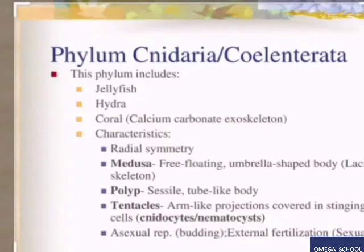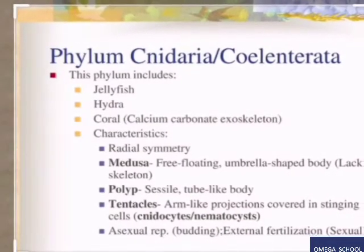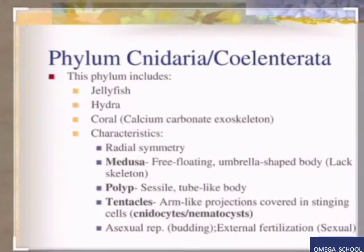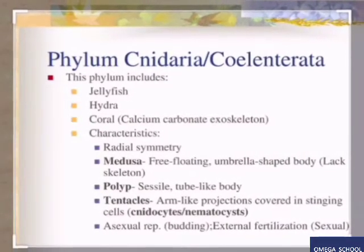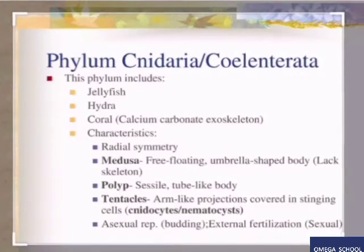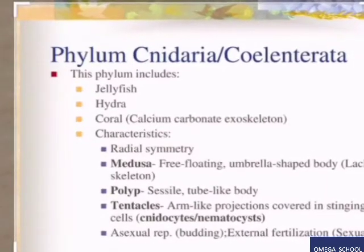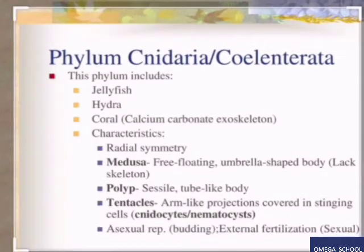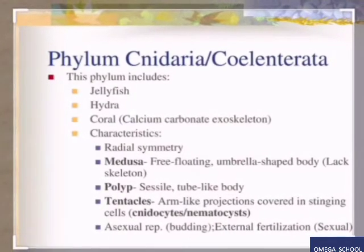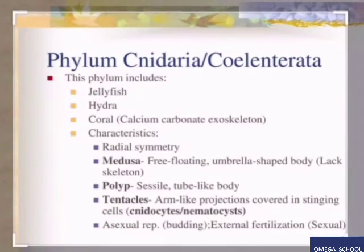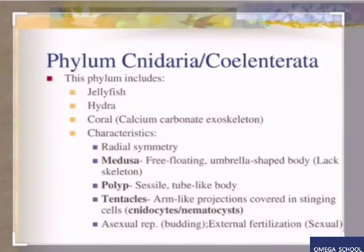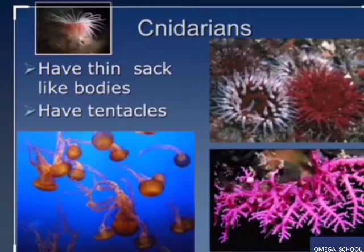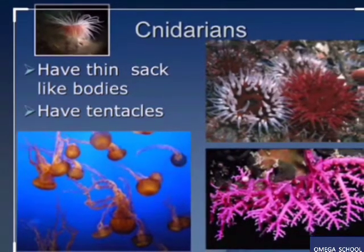The next one is the phylum Cnidaria, also called Coelenterata. This phylum includes jellyfish, hydra, and coral. They are radially symmetrical, meaning their body structure is divided into many halves that are mirror images of one another. They have tentacles which help them capture prey, and these tentacles contain a chemical poison that immobilizes prey.